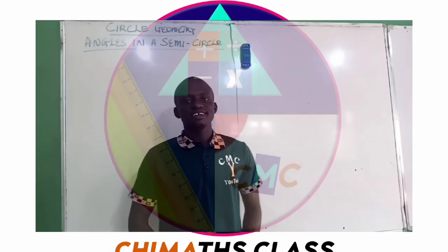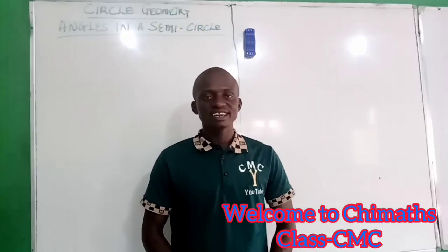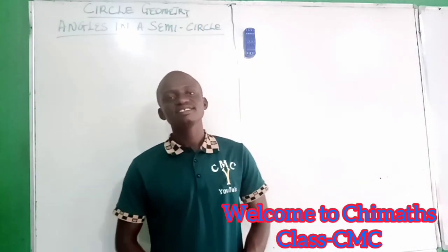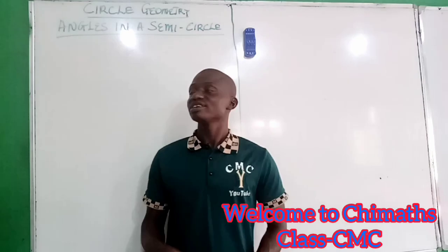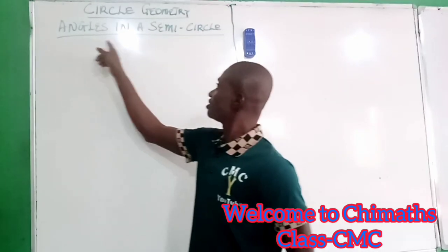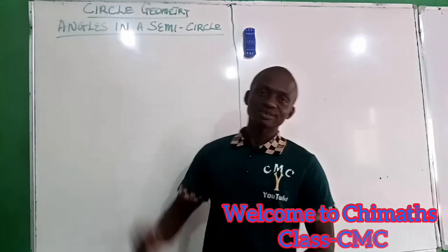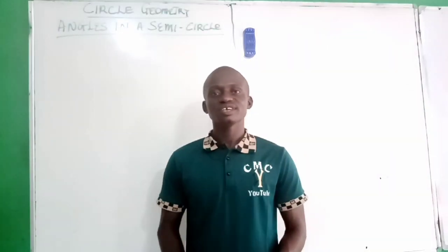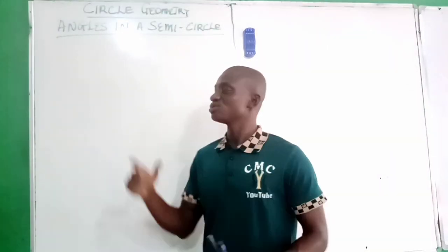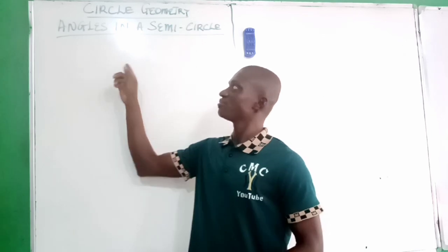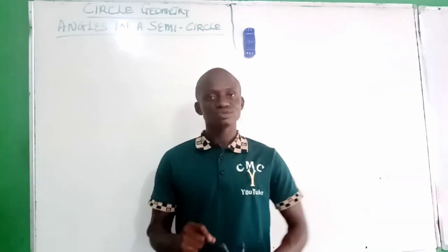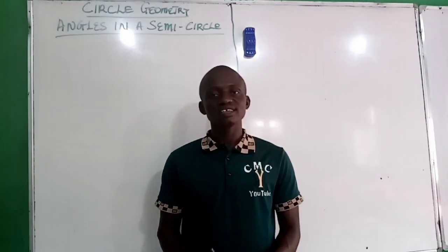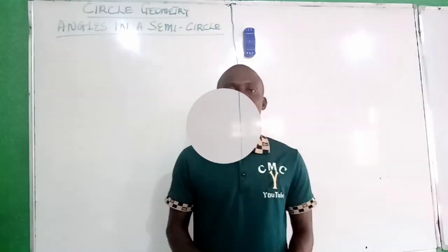Hi, welcome to Chimaths Class. In this lesson, we'll be looking at angles in the semicircle — circle geometry. We are going to show or prove that the angle in the semicircle is 90 degrees.